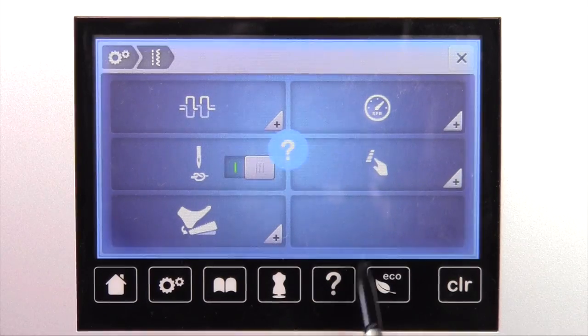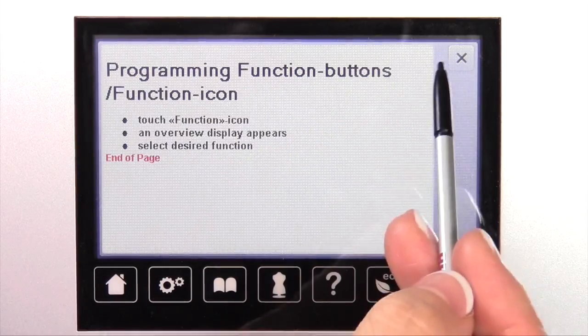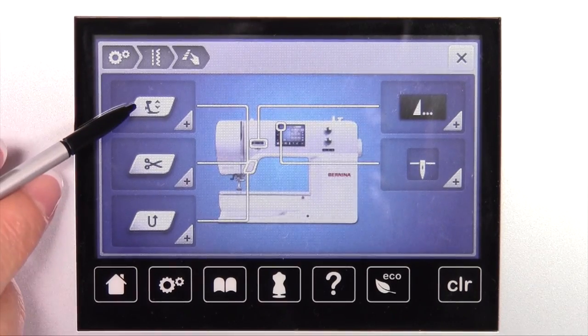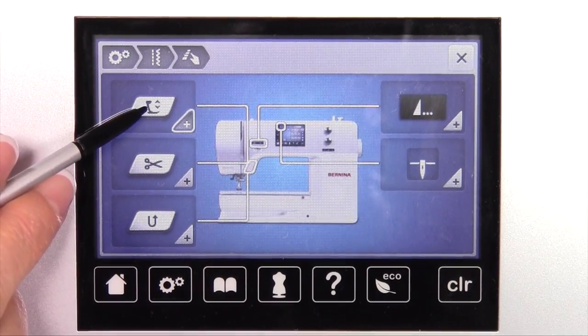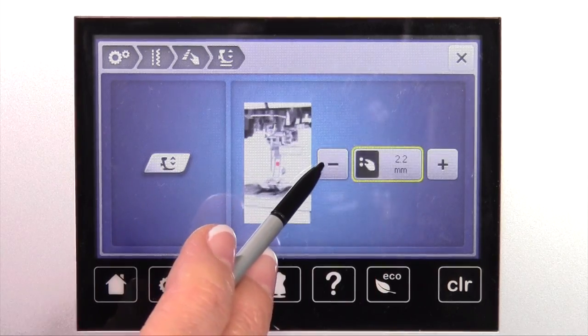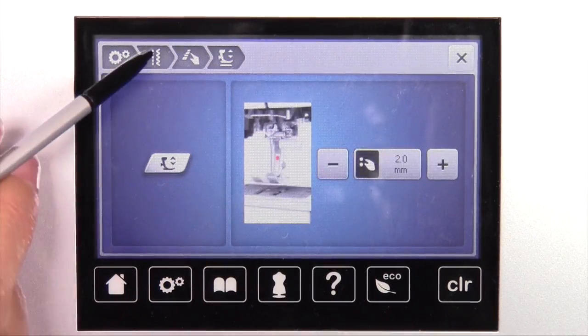Next we have, let's see here, by its actual name, program function and buttons. There's a lot in here. When you go in, each one is identified. For example, you can program in what this button does. This is to lift and lower the presser foot by how much. You can change that to be more or less based on what you need it to be.